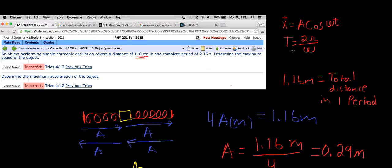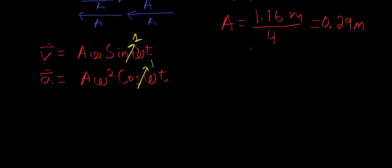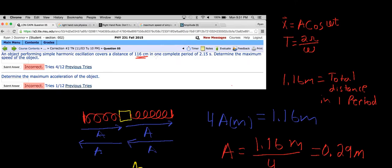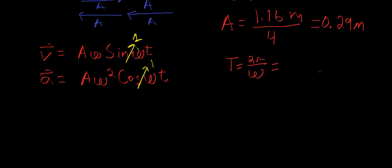What I wrote up at the top is our period equals 2π divided by omega. So our period equals 2π over omega, which as we were given in our equation, equals 2.15 seconds. If we want to solve for omega here, we get 2π over 2.15 seconds equals omega, and this turns out to equal roughly 2.92 radians per second.